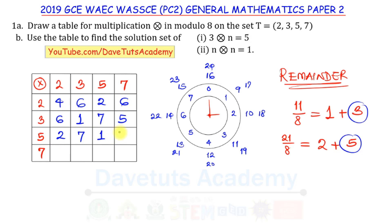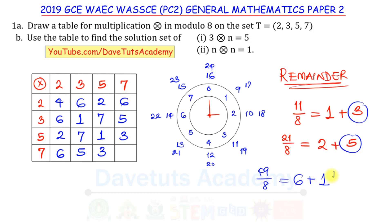For 5 × 7 = 35: 35 ÷ 8 = 4 remainder 3 (since 8 × 4 = 32, 35 − 32 = 3), so enter 3. Then 7 × 3 = 21, remainder 5, so enter 5. Then 7 × 5 gives 3 as well. Finally, 7 × 7 = 49: 49 ÷ 8 = 6 remainder 1 (since 8 × 6 = 48), so enter 1.